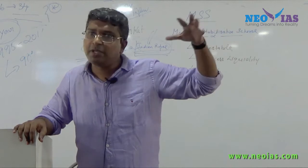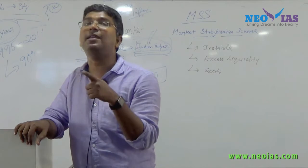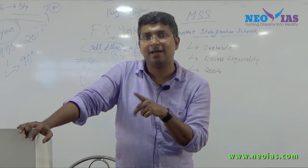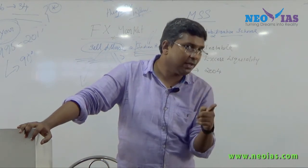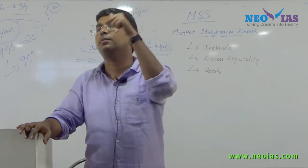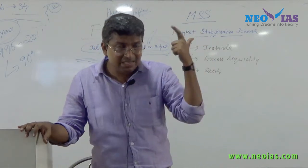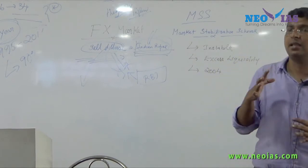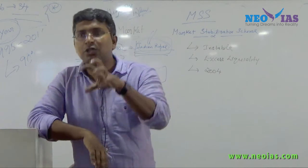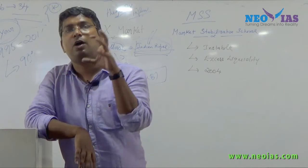The MSS fund cannot be used for any other purpose — it should be kept idle with RBI. There is also a liability for the government: unlike CRR, under MSS the government has to pay interest on the amount absorbed. Normally, MSS bonds are issued by RBI to absorb excess liquidity mainly due to foreign inflows — that is the standard textbook definition.